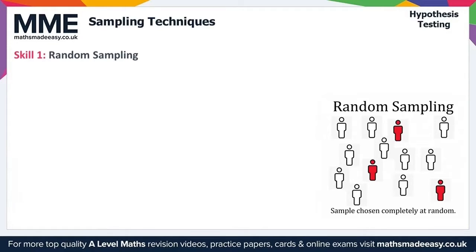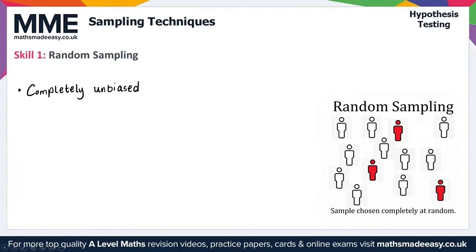Random sampling has the advantage of being completely unbiased, because every member of the population has an equal chance of being selected.